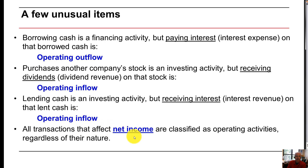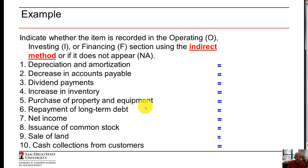These are exceptions to be aware of. All transactions that affect net income are classified as operating activities regardless of their nature — that's one quick way of remembering it. If a transaction affects net income, it will generally be classified as an operating activity. Now let's indicate whether each item is recorded in the operating, investing, or financing sections using the indirect method, which we learned in lecture one.